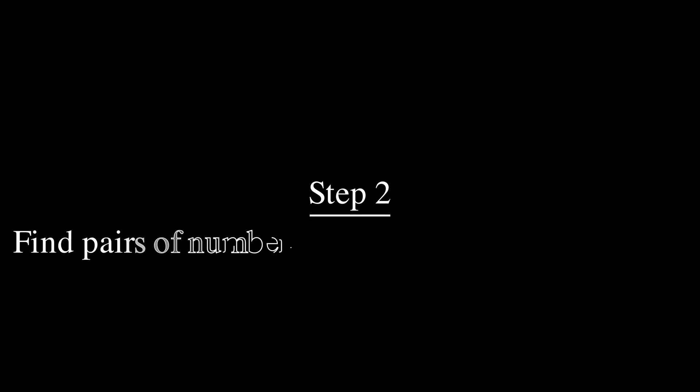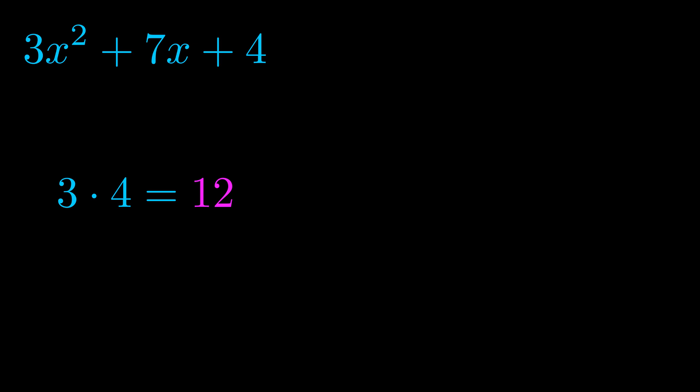Step two is to try to find all of the pairs which multiply to this number. Now it turns out you don't really need to find all of them, but go ahead and write down as many numbers as you can that multiply to the magenta value for now. Pause the video and resume when you're ready to continue.